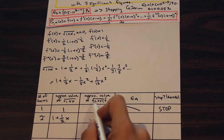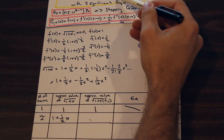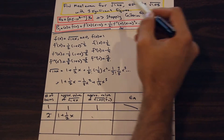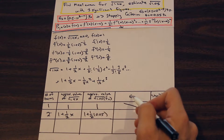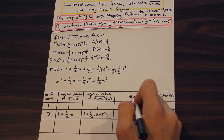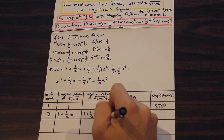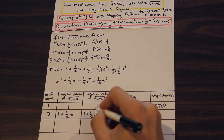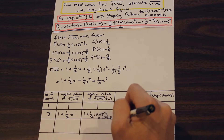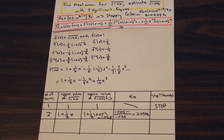So we're going to continue and take a look at the first two terms of the Taylor series. We write out the first two terms: 1 + (1/2)x. For the approximate value of √1.05 — which is what we call fn — we plug in x = 0.05, since if 1 + x = 1.05 then x = 0.05. So plugging that in gives us 1.025. We're going to find epsilon_a by subtracting: 1.025 minus the previous fn value of 1, divided by 1.025, which gives us 2.439%.